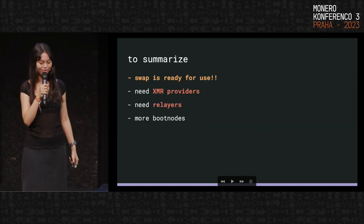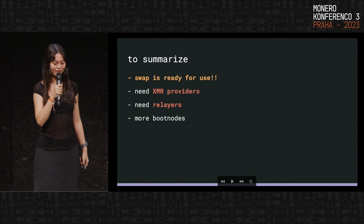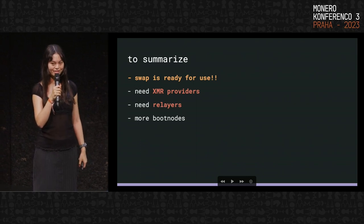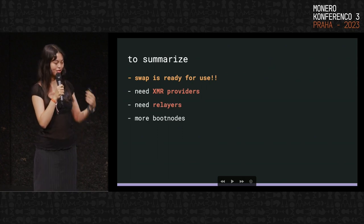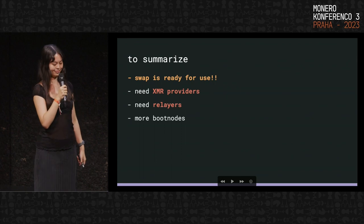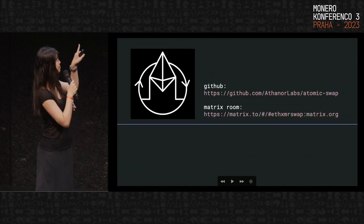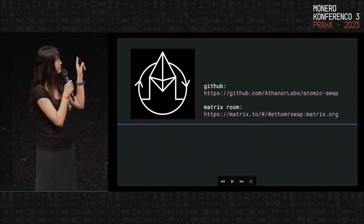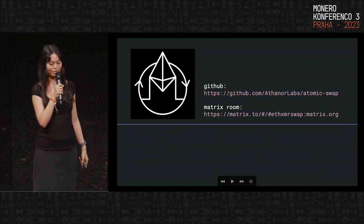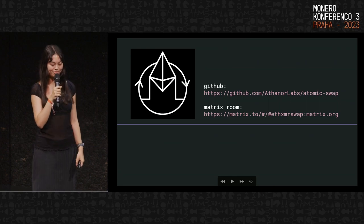In summary: it's ready for use. We need Monero providers and liquidity providers — if you want to be one, definitely reach out. We need relayers, and more boot nodes will always be good as well. The GitHub is at noot-lab slash atomic-swap, and there's also a Matrix room at ethXMR swap. Feel free to check out the GitHub or reach out.